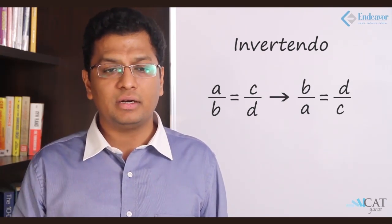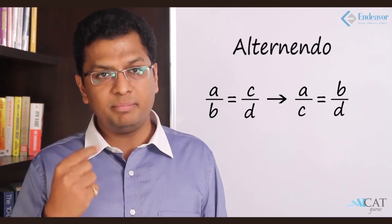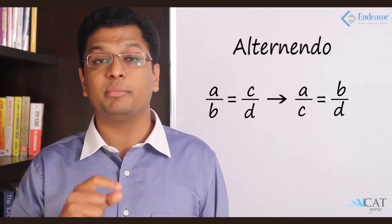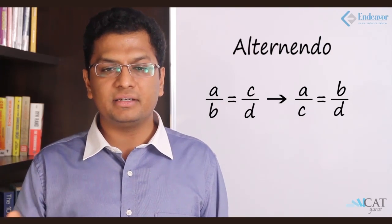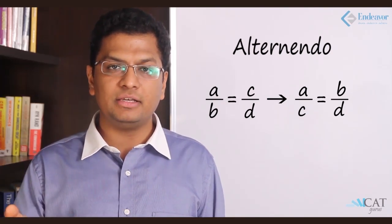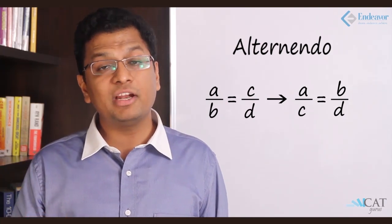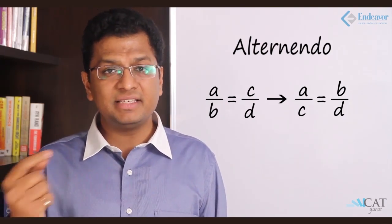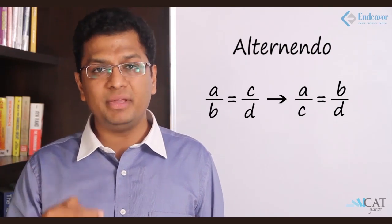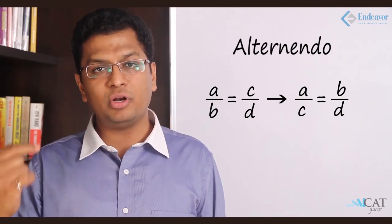Let's look at another one - alternendo. What are we doing here? A, B, C, D are in a ratio or in a proportion, so we alternate it. We interchange B and C, so it will be A upon C equal to B upon D. We can do it otherwise also. B and C remain same, A and D can be interchanged, so D upon B will equal to C upon A.